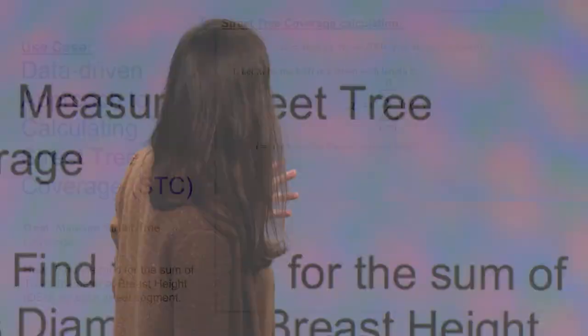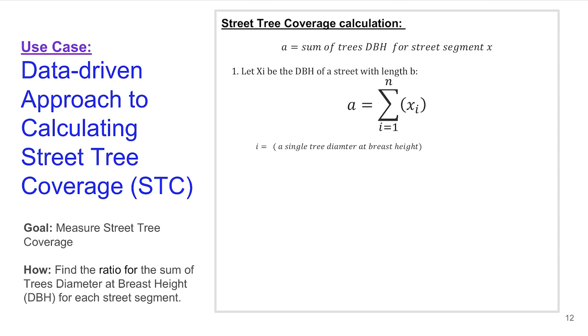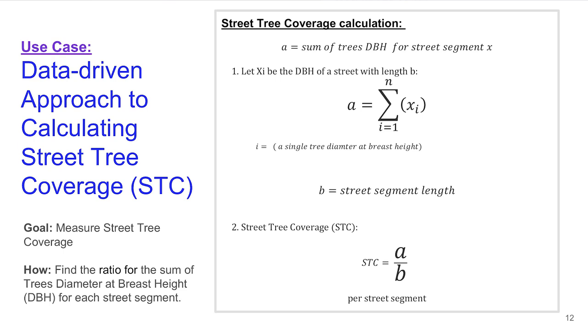For this calculation, I wanted to measure street tree coverage for each and every street segment. I measured it by finding the ratio — summing over DBH values for all trees on a street segment, dividing by the street segment length. This resulted in what I called STC, or Street Tree Coverage — a score computed for each and every New York City street segment.